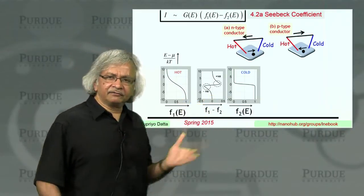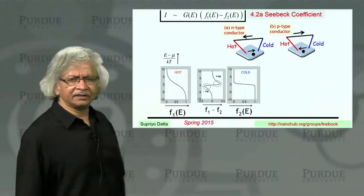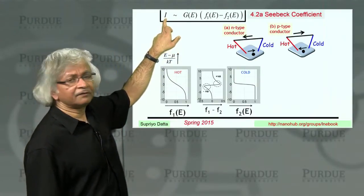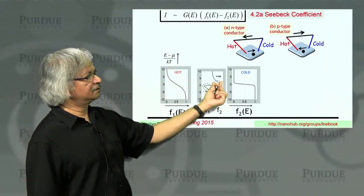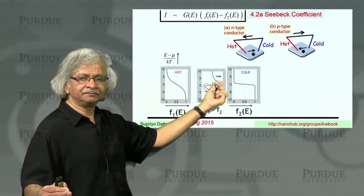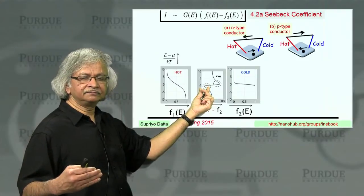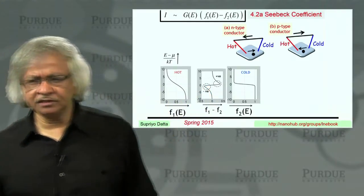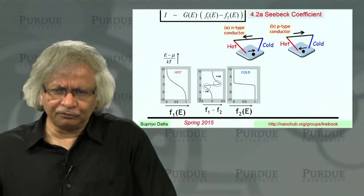Now, would that give rise to a current flow? Well, ordinarily, you'd say probably not because the current at any energy depends on F1 minus F2. At certain energies, you've got positive F1 minus F2, so electrons flow in one direction. At certain energies, it flows in the opposite direction. And so when you add it all up, add up all the energies, you'll get 0, nothing much.